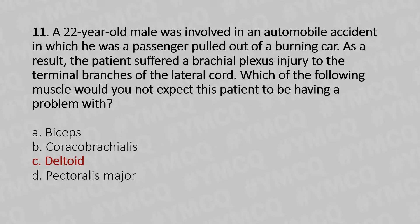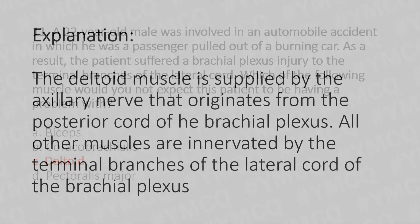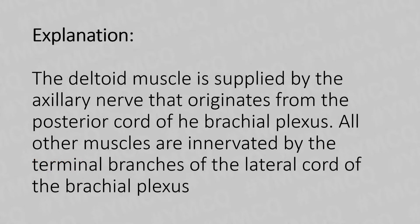The answer is Option C: deltoid. The deltoid muscle is supplied by the axillary nerve, which originates from the posterior cord of the brachial plexus. All the other muscles are innervated by terminal branches of the lateral cord of the brachial plexus.